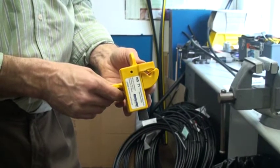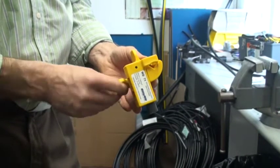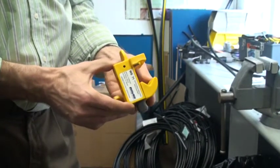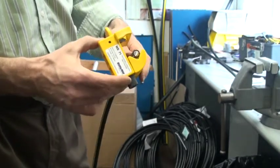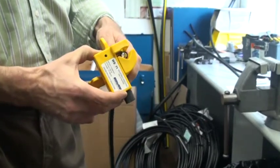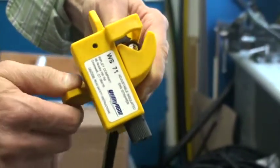Loosen the jaw locking knob to open the tool. Place the tool on the cable up to the blade. Lock the cable in the tool with the sliding jaw.